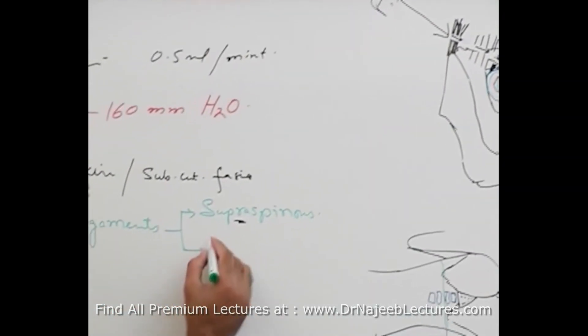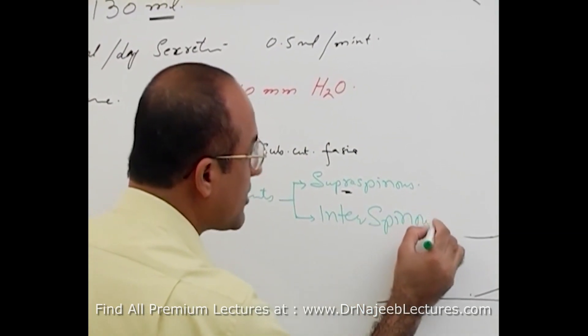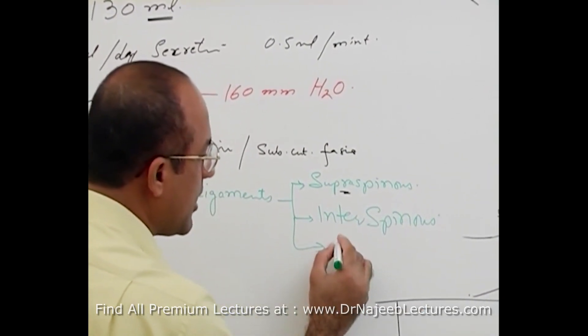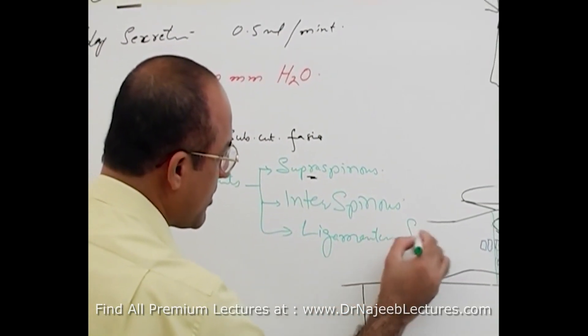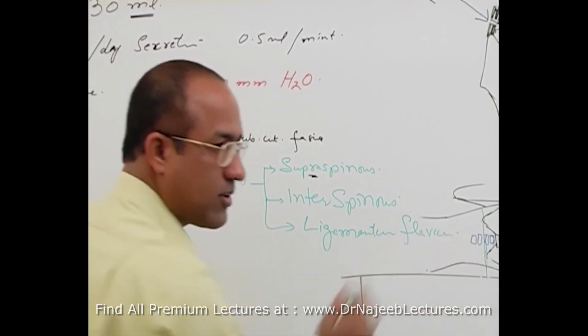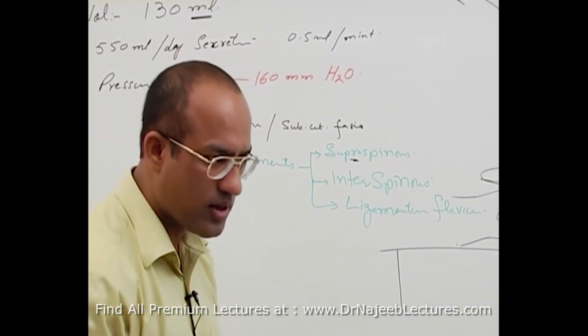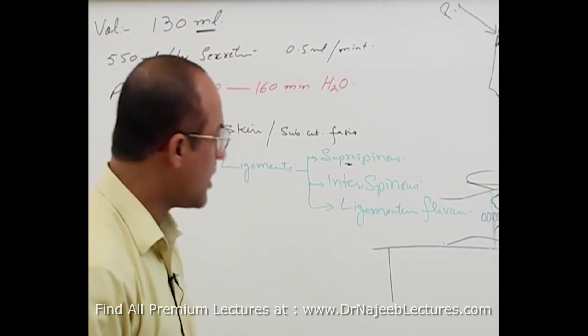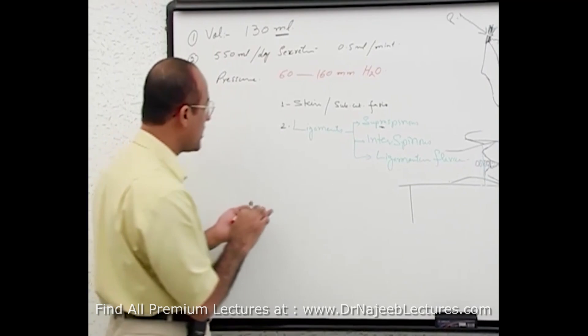Supraspinous is crossed. Then interspinous ligament is crossed. Then ligamentum. Ligamentum. What is the beautiful name? Flavum. You don't understand something? It is somewhat yellow color. Cartilage type. Ligamentum flavum. It doesn't have any type of good flavor.